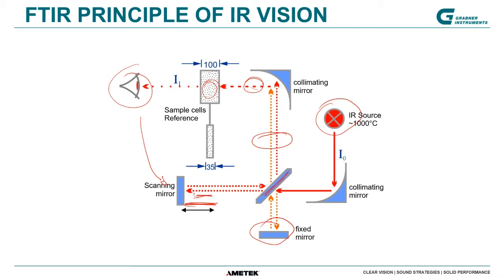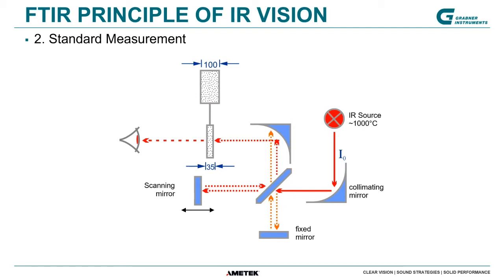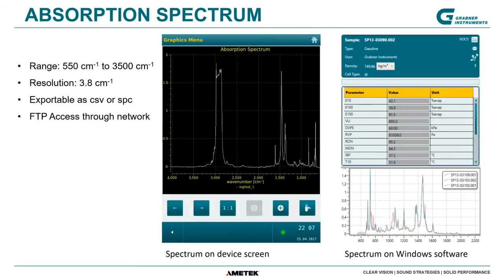The setup of our instrument uses three different cells. You see here the 100-micron cell and here a 35-micron cell. In the first run, we do a scan of the window just to get a reference scan. In standard measurements, we scan through the 35-micrometer sample path length, which is applicable for most fuels and samples. But for certain standards — especially for jet or diesel standards — we also need to use the 100-micron cell. What you finally get after transforming your interferogram is an absorption spectrum.